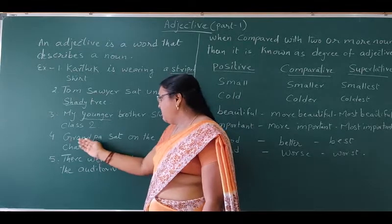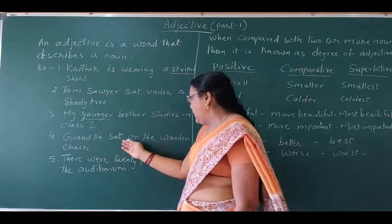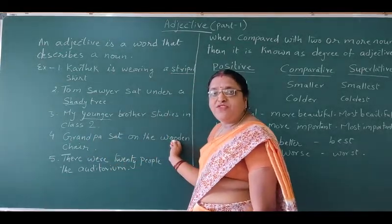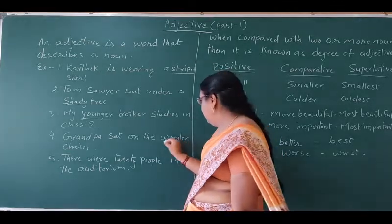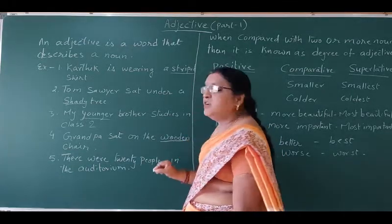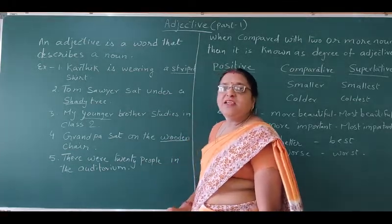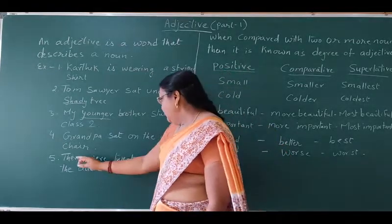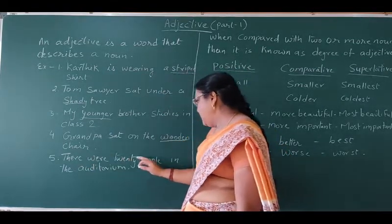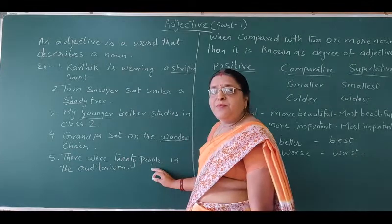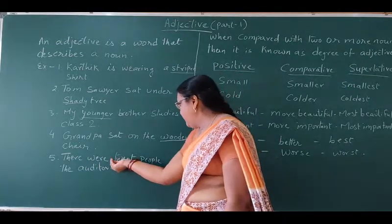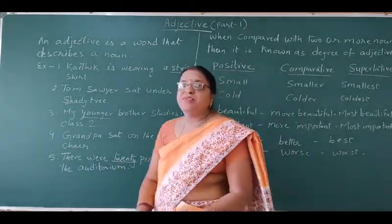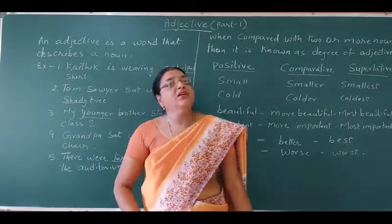Fourth sentence: Grandpa sat on the wooden chair. Which type of chair? Wooden chair. So, wooden here indicates the adjective. There were 20 people. How many people were there? 20 people. So, 20 describes the adjective.